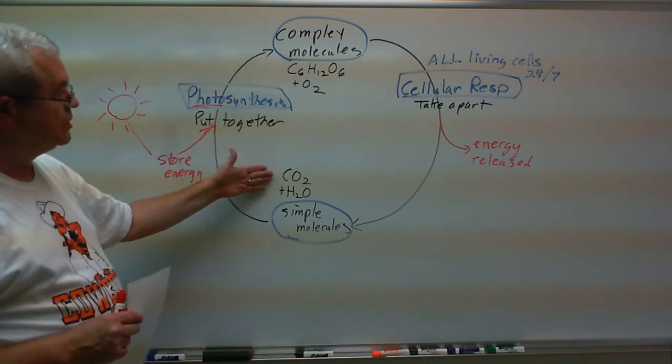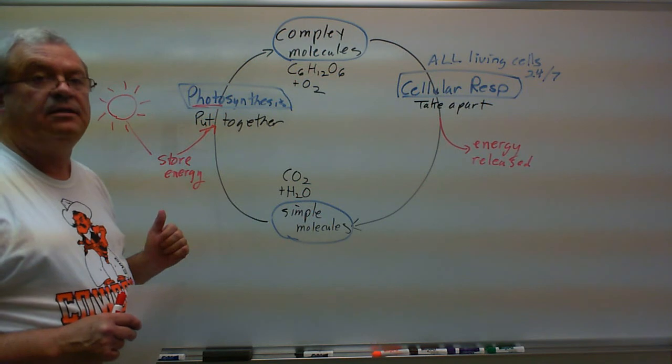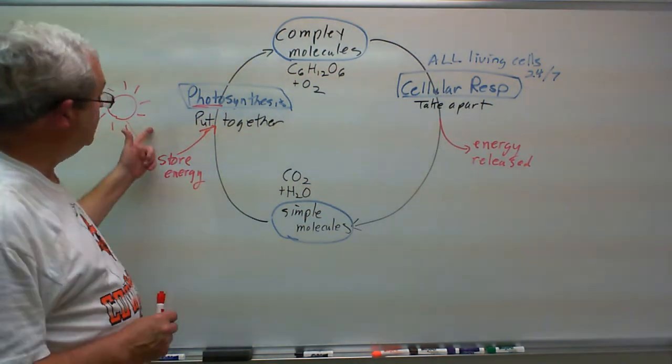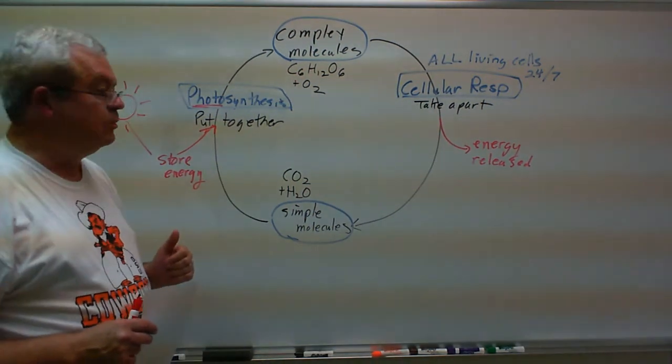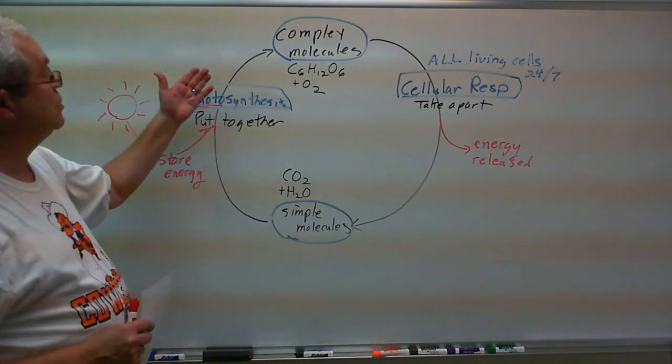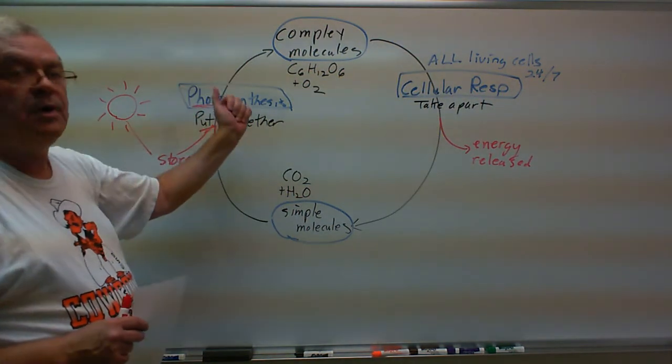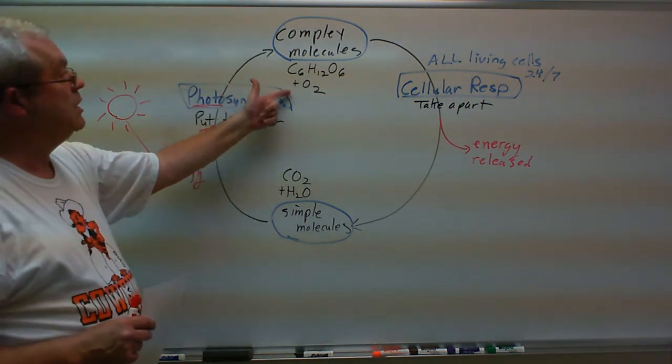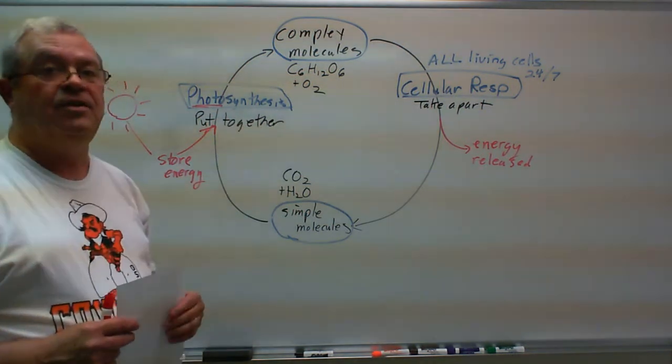These are the raw materials of photosynthesis. Give a plant, give a leaf, some sunshine, and these two raw materials, and it goes to work. Producing complex molecules. Which ones? Well, these. These same ones.